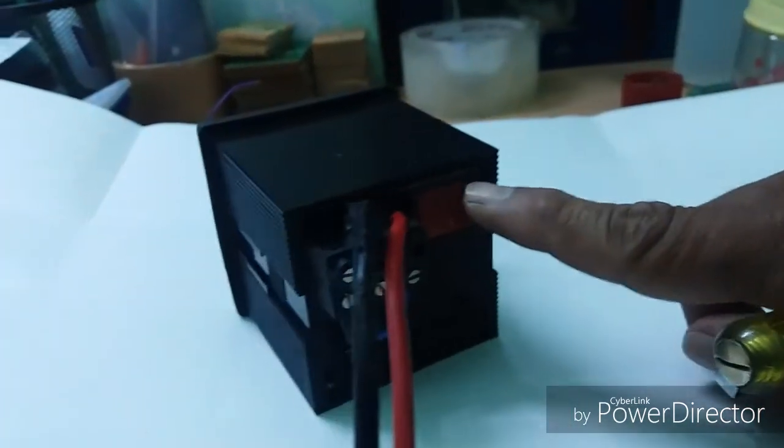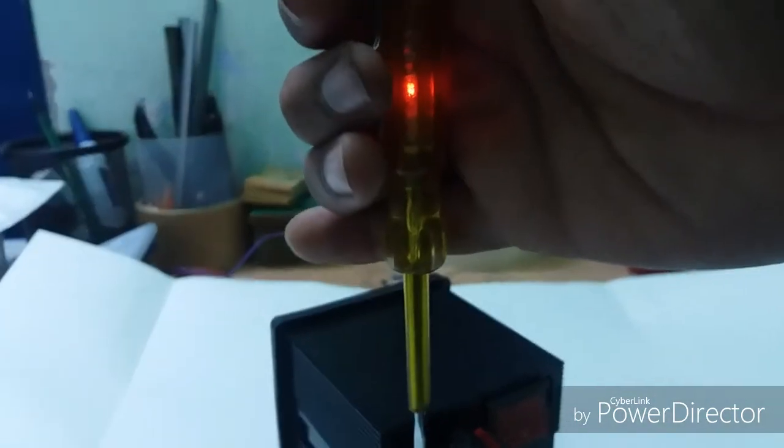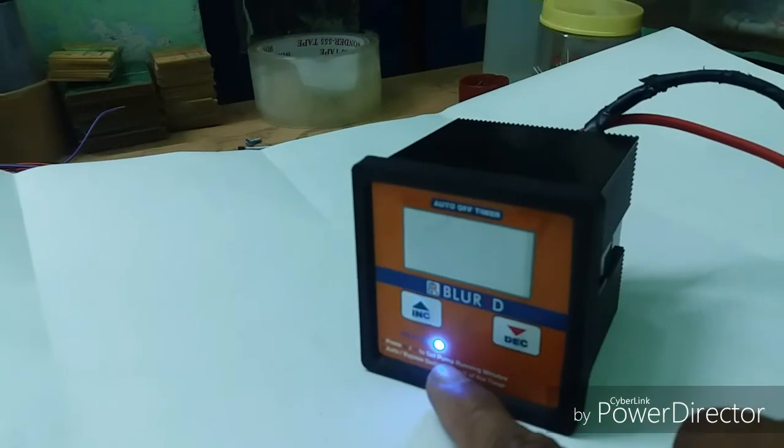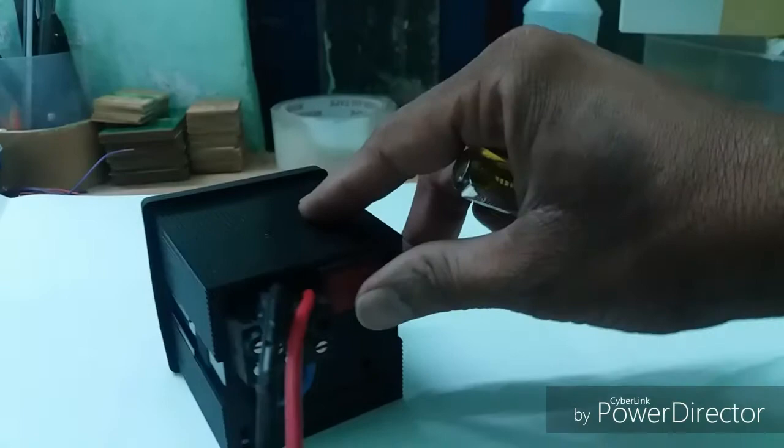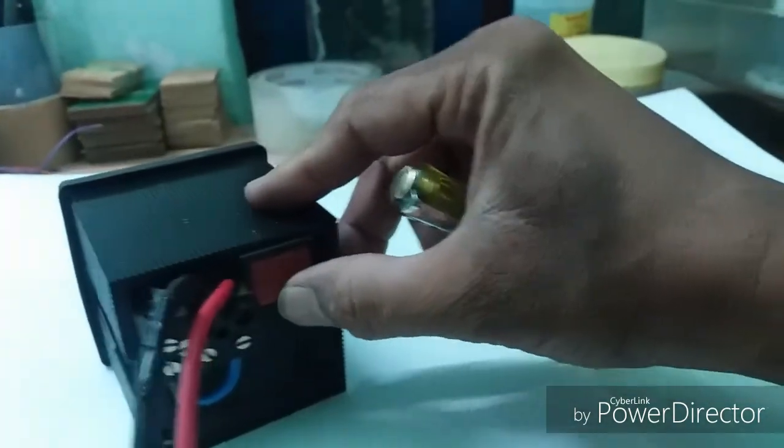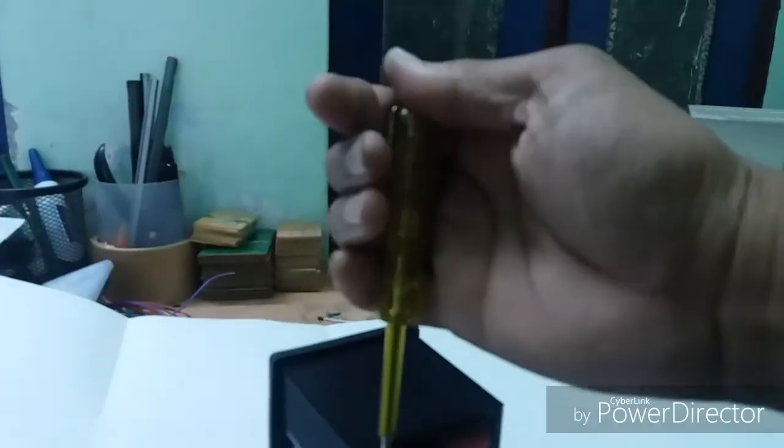So the product is in automatic mode, so the product will be switched off. Now we can keep it in bypass. This is bypass mode, so we can get the direct supply. In this condition, only you will get the relay-on LED, not a timer. So now we have to keep the switch in automatic mode. This is the automatic mode. In this condition, you can't get a supply, so the display shows off.